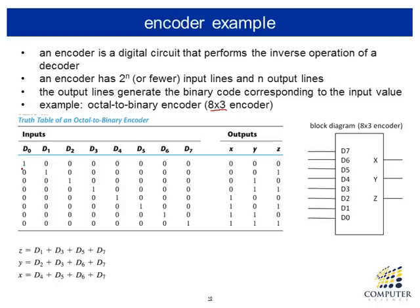If the input has a one on d0, the output produces 000, meaning the zeroth input position is one. If the output is 001, that indicates input position one is a one while the rest of the seven inputs are zeros. As you can see in the truth table of the encoder, only one input shows up as one diagonally — that is the precondition: only one of the inputs is one while the rest must be zero.